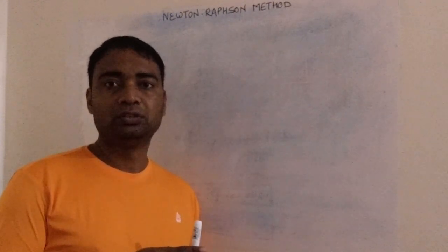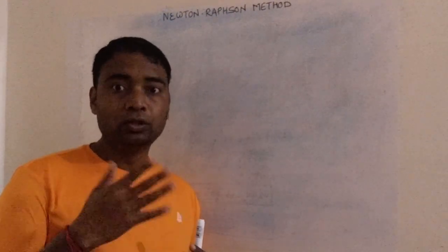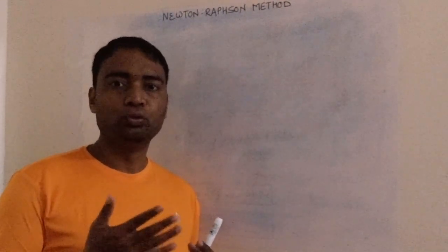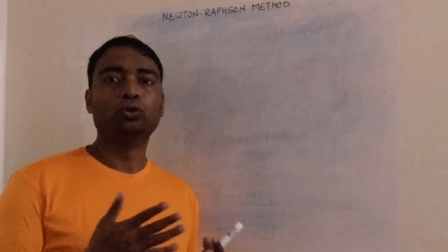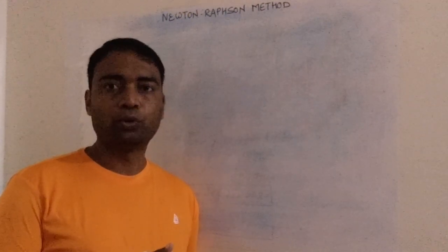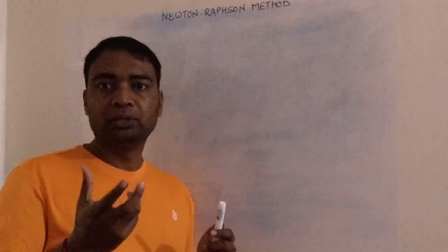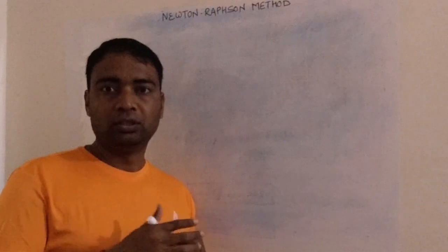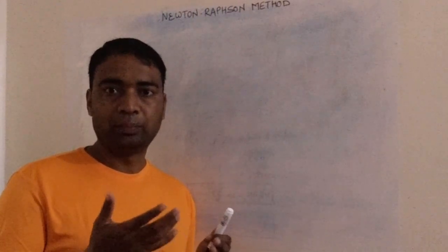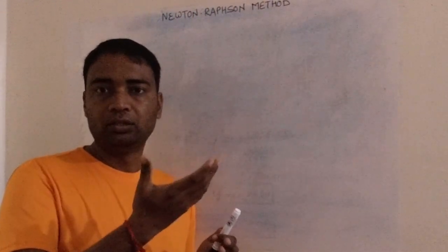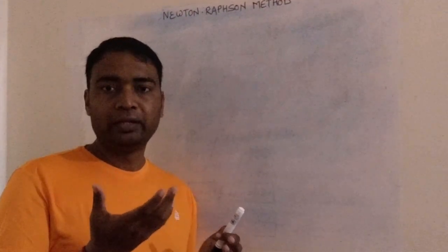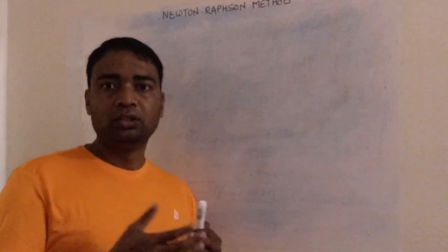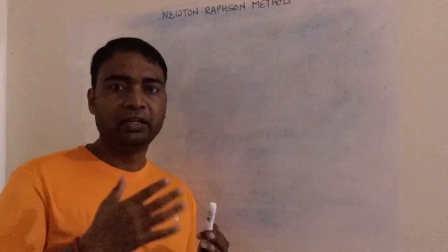Today's video is about a method in calculus which is used to find the nth root of a number. Nth root means you can use this method to find cube root, square root, fourth root, fifth root — it depends on what you want to find. I'm implementing this method in PowerShell, a Windows-based scripting language.